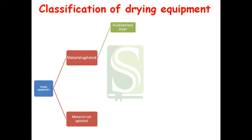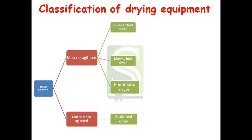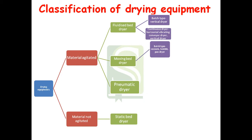Material agitated includes fluidized bed dryer, moving bed dryer, and pneumatic dryer. Material not agitated includes static bed dryer, meaning stationary, and hence the material does not get agitated. The moving bed dryer includes batch type of vacuum and tumble pan dryer, and continuous type includes rotary, turbo tray, vibrating conveyor, tower and cascade, and screw conveyor dryer.